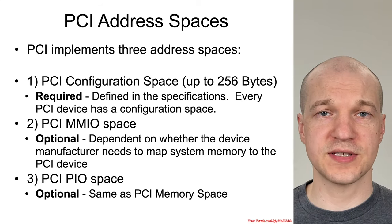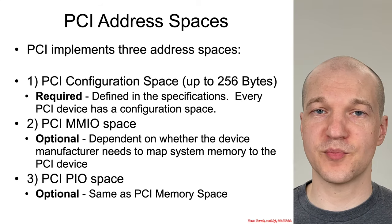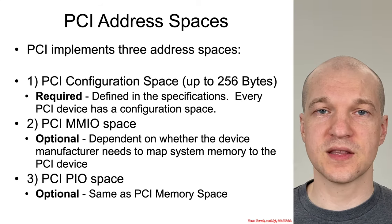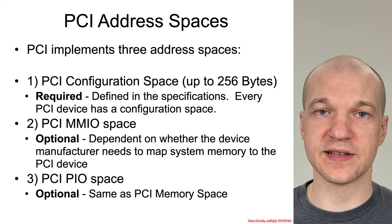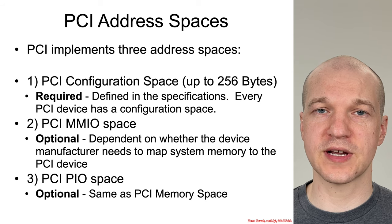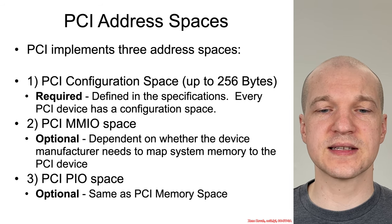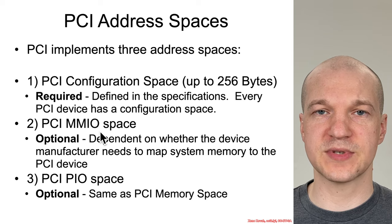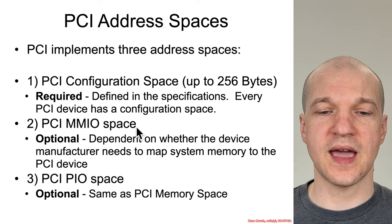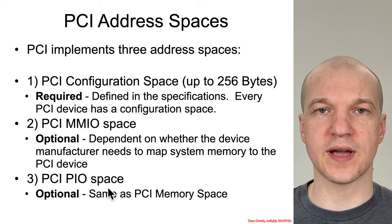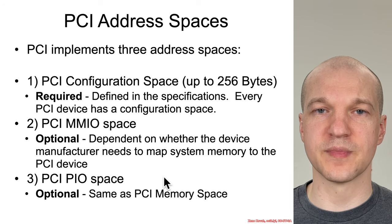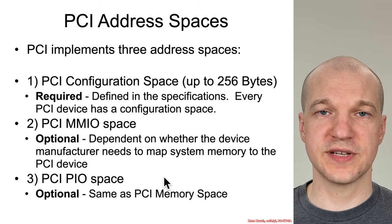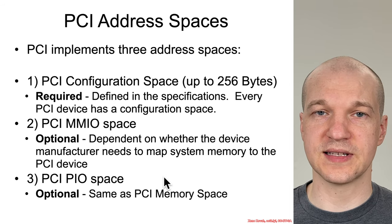Let's talk about the three address spaces provided by PCI. The first is required: the configuration address space, which is the main thing we're going to care about. The next is an optional PCI memory-mapped IO address space, and then there is an optional port IO address space. We'll see as we progress how exactly these are set up, but it's really up to the vendor to decide whether or not they need these.